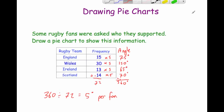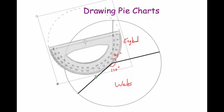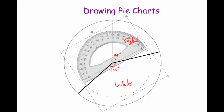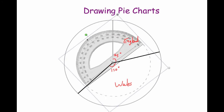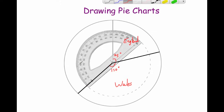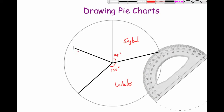Next is Ireland at 65 degrees. Again get your protractor, spin it around so the zero lines up with the line just drawn, and put the cross on the centre of the circle. Measure 65 degrees, then move the protractor and use your pencil and ruler to draw a line from the centre through that point to the edge of the circle. Label it 65 degrees and Ireland.